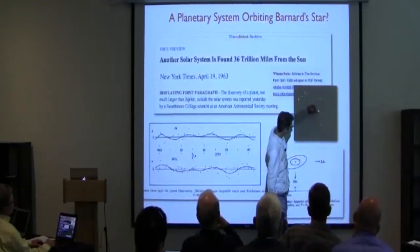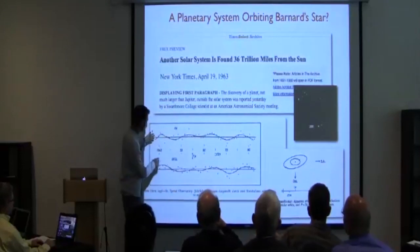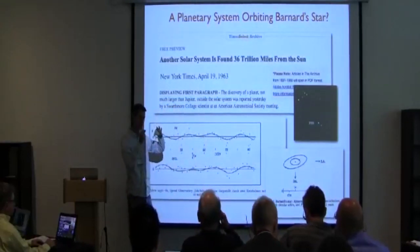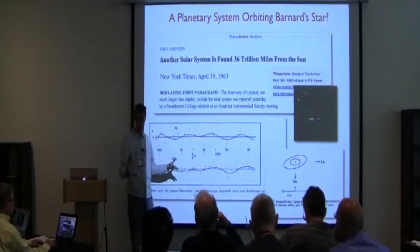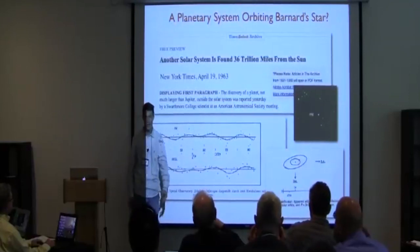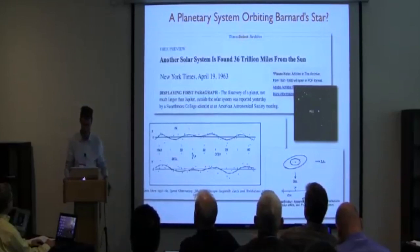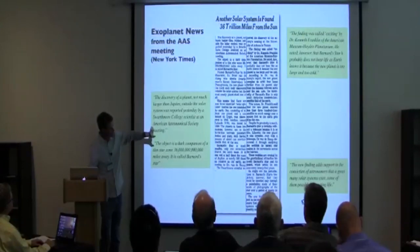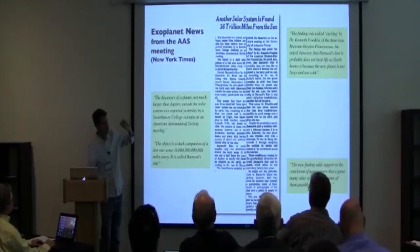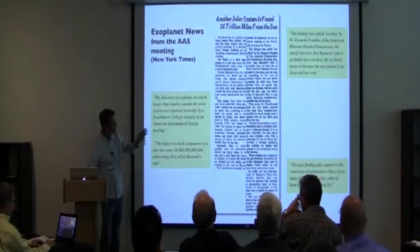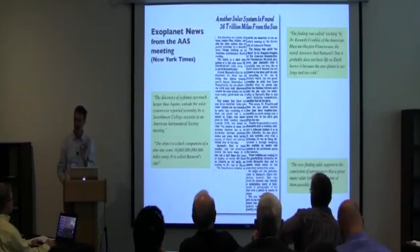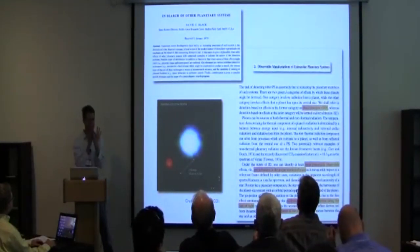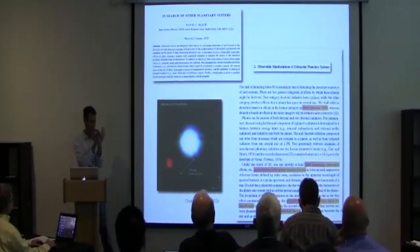So the way this planet was discovered was, as Barnard's star traces its trajectory across the sky, there's a yearly motion from Earth's perspective changing. As the Earth goes around the sun, we get a different vantage point. And if you subtract that out, what Van de Kamp measured was this back and forth motion on the plane of the sky, which was the response of the star to one, and then he believed later, two planets orbiting it. So this was announced with great fanfare, made the front page of the New York Times.